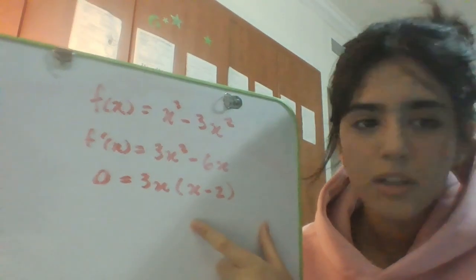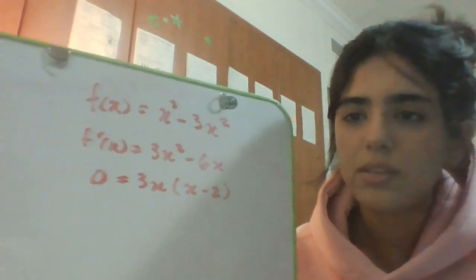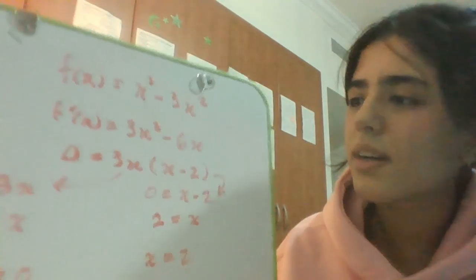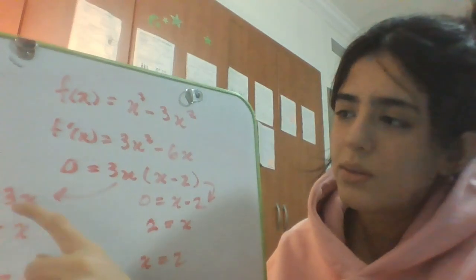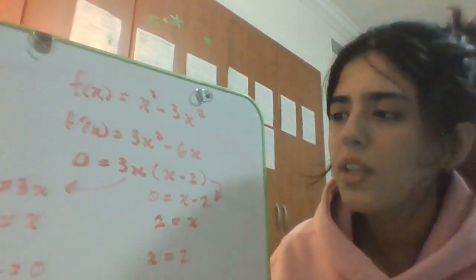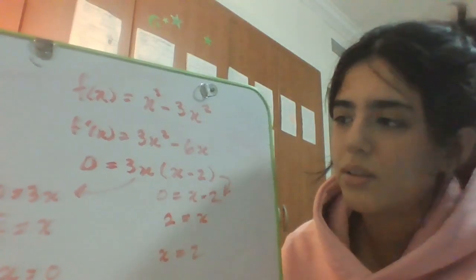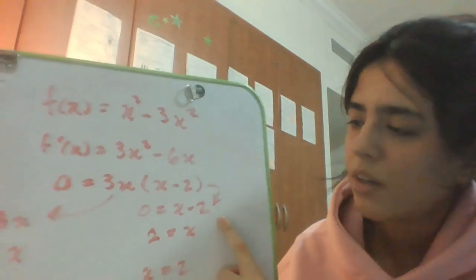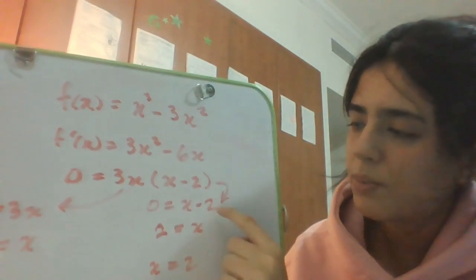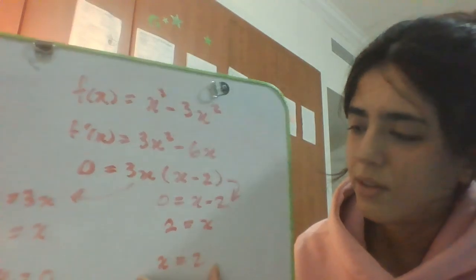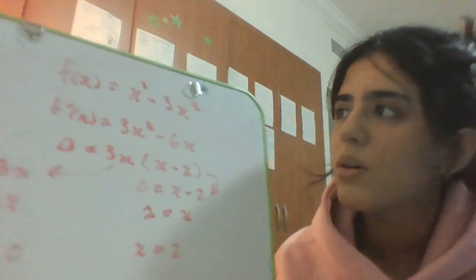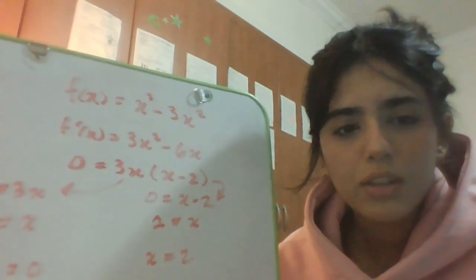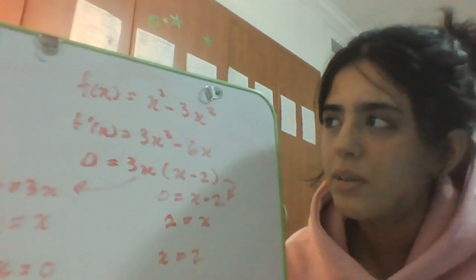Here I just moved it separately: 3x = 0, and using algebra you'll find that x = 0 is a critical number. Then I did the same here, and when you move the 2 it turns positive, and you'll be left with x = 2 as your critical number. So yeah, this question is solved and we found both critical numbers.